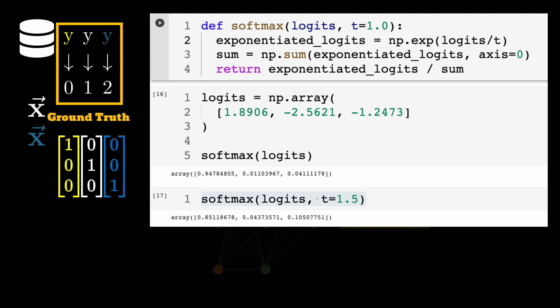But what if I change the value of t to 1.5? If you look at the line 2 of the softmax function, we are reducing the value of logits before passing them to the exponential function and the consequences that in the output, we now see that the index 0 has a value of 0.85 instead of 0.94 and the entries at the other indices have increased. And the consequence is that the distance between the entries have reduced now.